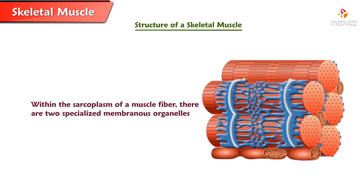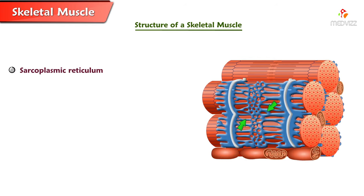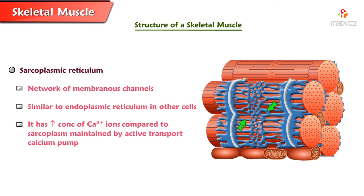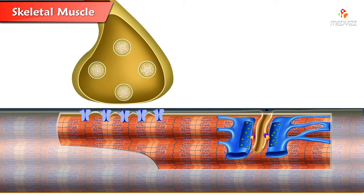Within the sarcoplasm of a muscle fiber, there are two specialized membranous organelles. The sarcoplasmic reticulum is a network of membranous channels that surrounds each myofibril and runs parallel to it — it is the same as endoplasmic reticulum in other cells. It has a high concentration of calcium ions compared to the sarcoplasm, maintained by an active transport calcium pump. When stimulated by a muscle impulse, membranes become more permeable to calcium ions, and calcium diffuses out of the sarcoplasmic reticulum into the sarcoplasm.